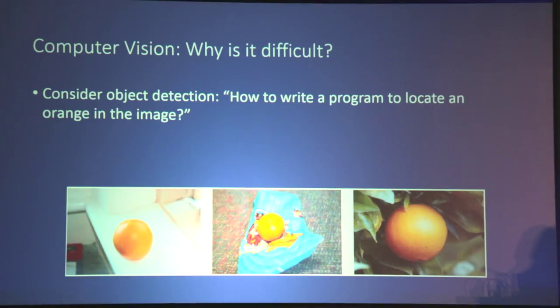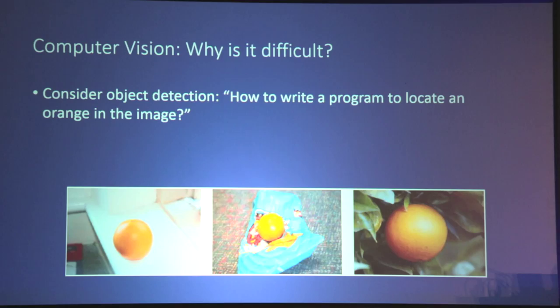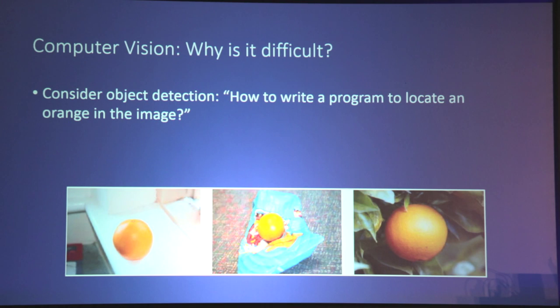Let's take an example. Here's a project from when I was first learning computer vision. We took a few pictures of oranges. You would think of an orange as a very simple object that you can see and detect in an image, at least as a human being. But how would you write a program to detect this automatically and do it reliably and consistently? We're going to take this example and discuss it today.